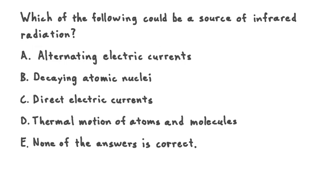Which of the following could be a source of infrared radiation? A. Alternating electric currents B. Decaying atomic nuclei C. Direct electric currents D. Thermal motion of atoms and molecules E. None of the answers is correct.